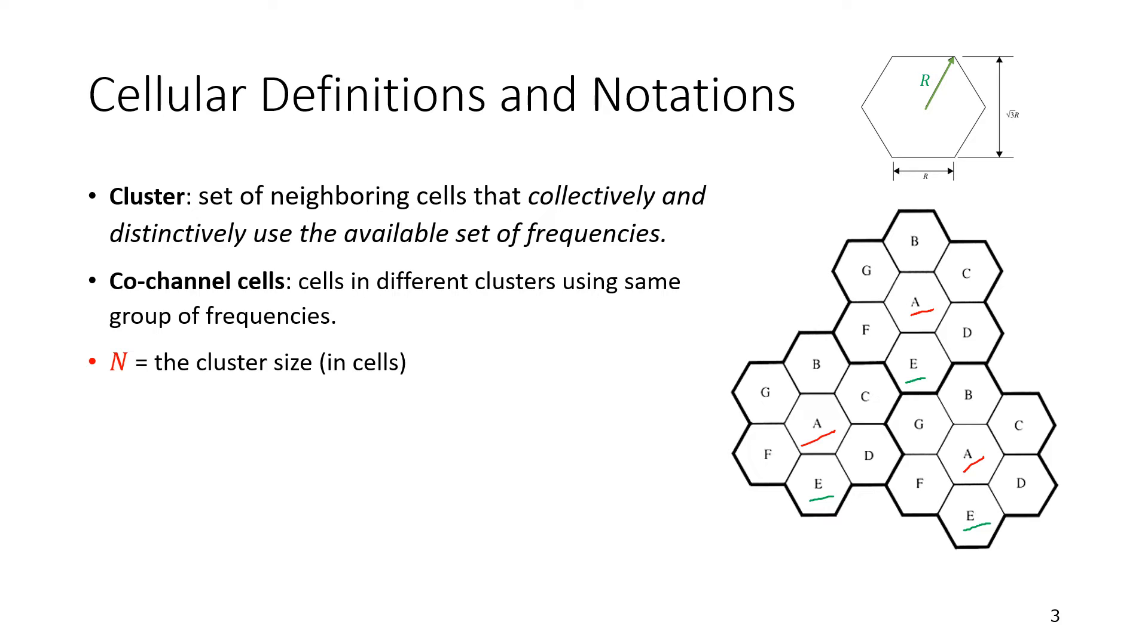N is the cluster size. So here we have one, two, three, four, five, six, because we have six edges for the hexagon, and then one in the center. So this is an example of capital N equal to seven. What is capital N? It is the cluster size, N cells. The unit is cells, seven cells.